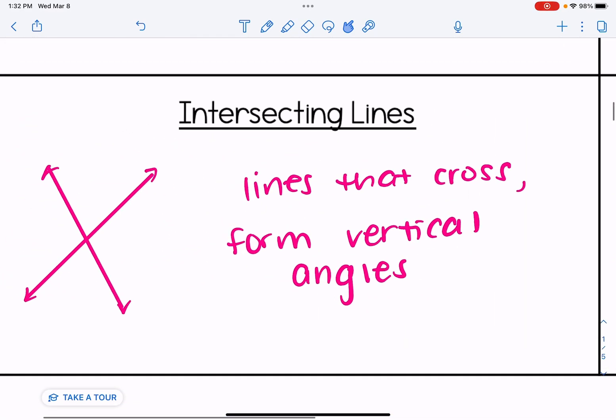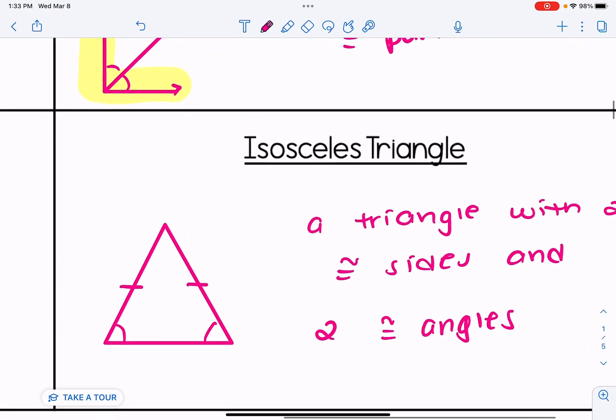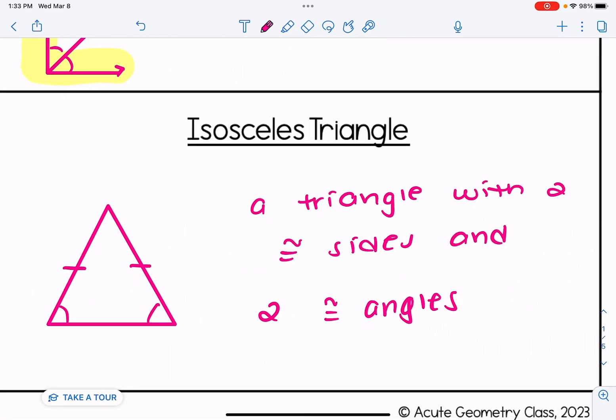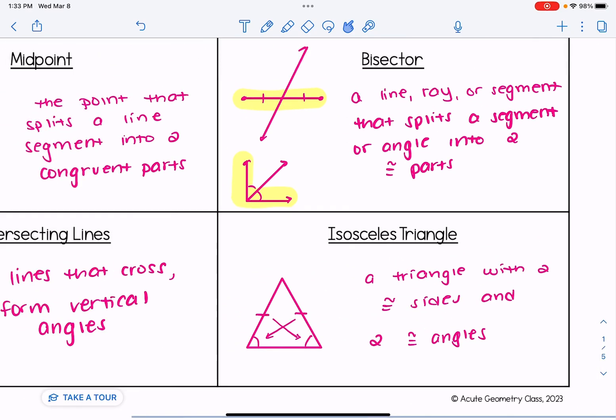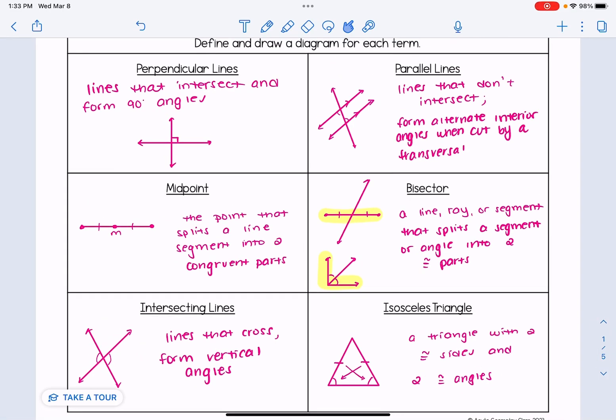Intersecting lines are lines that cross, and when they cross they form vertical angles. Those are the congruent angles that are opposite one another. Our last vocabulary term is isosceles triangle. That's a triangle that has two congruent sides and two congruent angles, and those congruent sides and angles are opposite one another. So these six vocabulary terms are key in order to work with congruent triangle proofs.